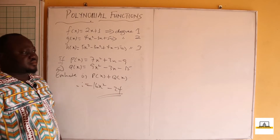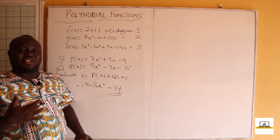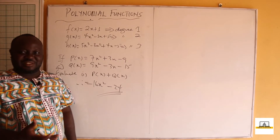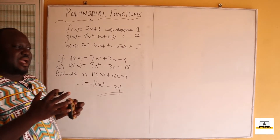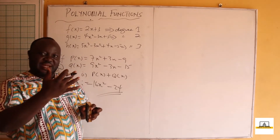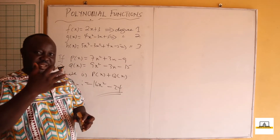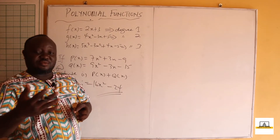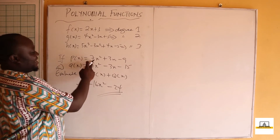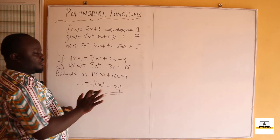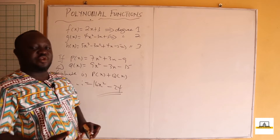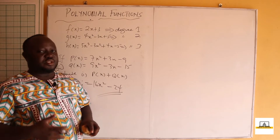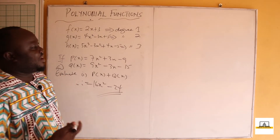Addition and subtraction of polynomials is straightforward — you simply add or subtract like terms. x³ adds with x³, x² adds with x², x adds with x, and constants add with constants. Don't add 7x² with -3x — each coefficient combines only with its corresponding coefficient. The same rule applies to subtraction.